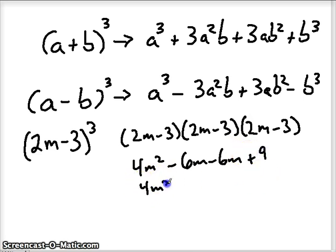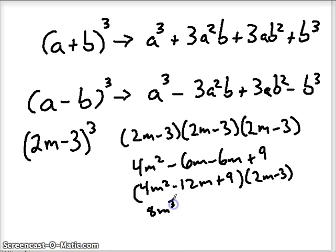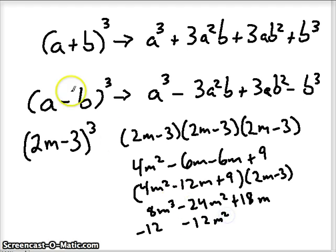Combine your like terms. And now we've got to multiply all of this by our last binomial there. So we'll do 2m times everything first. 2m times 4m squared is 8m cubed. 2m times negative 12m is negative 24m squared, and 2m times positive 9 is positive 18m. Multiply everything by negative 3 now. Negative 3 times 4m squared is negative 12m squared.